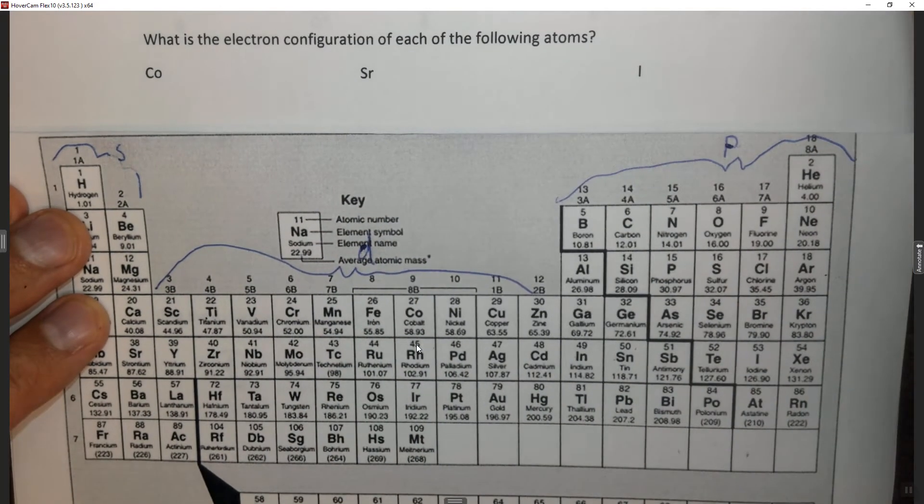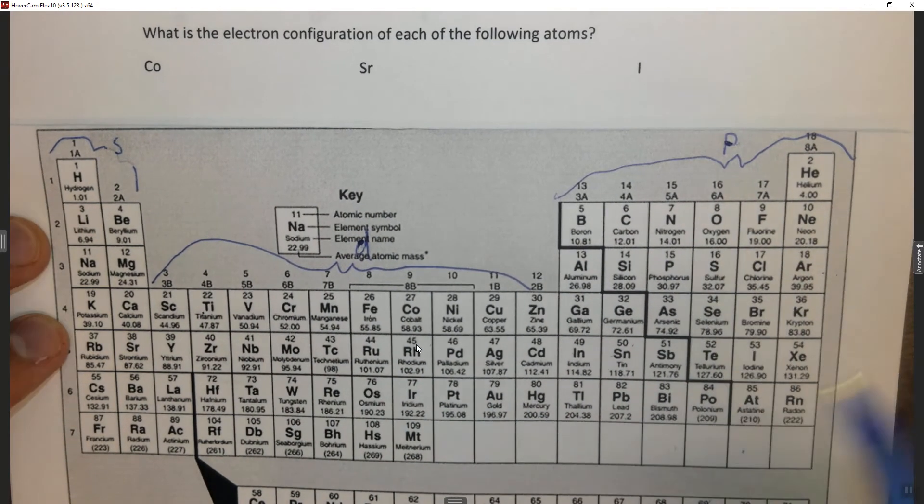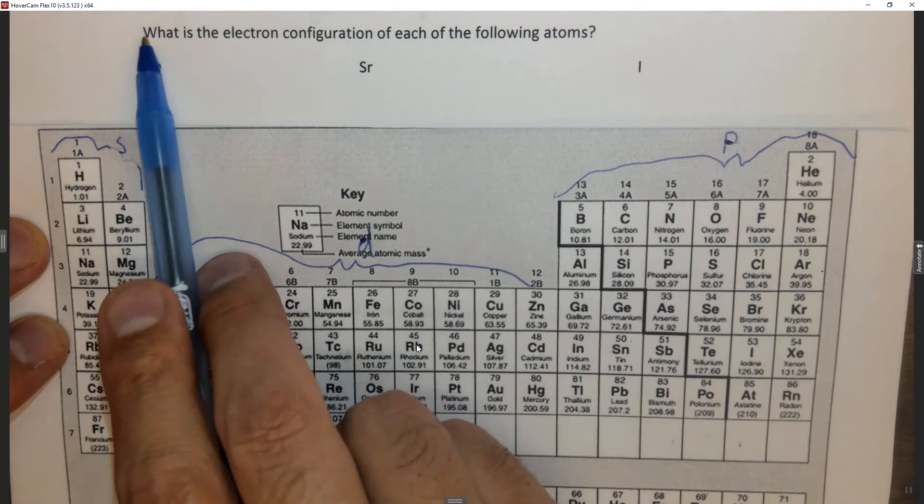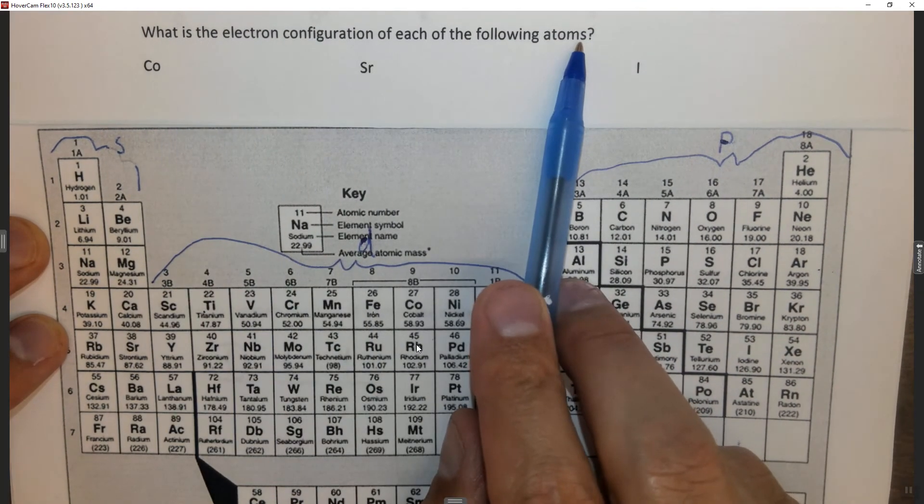If you haven't watched the previous question, please start with that. So this is the fast version. It asks what is the electron configuration of each of the following atoms?